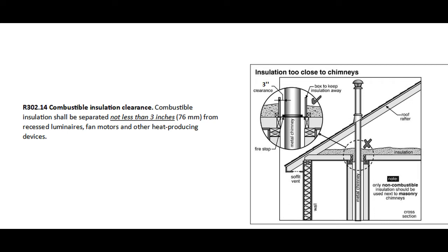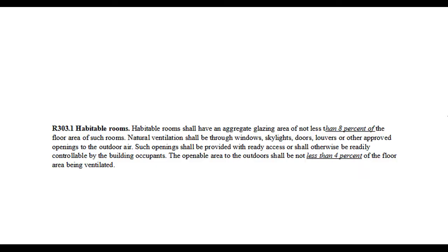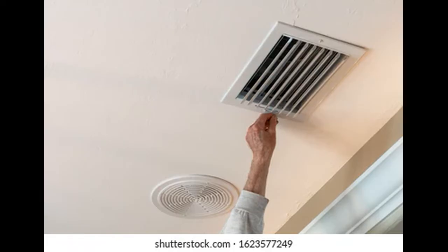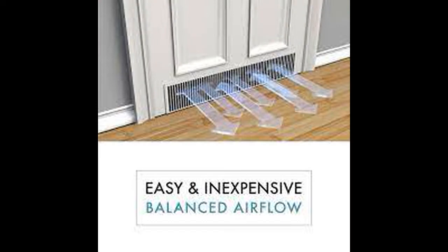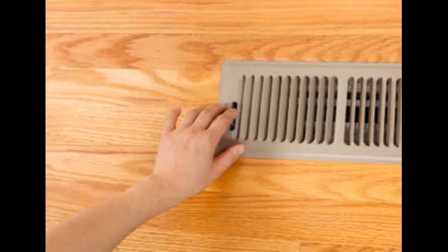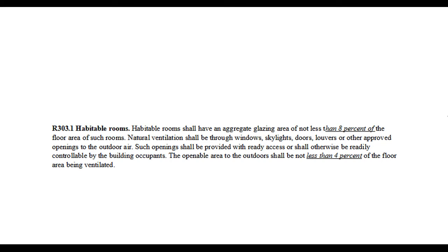R302.14 Combustible Insulation Clearance: 1. Combustible insulation shall be separated not less than 3 inches from recessed luminaires, fan motors, and other heat-producing devices. R303.1 Habitable Rooms: Habitable rooms shall have an aggregate glazing area of not less than 8% of the floor area of such rooms. Natural ventilation shall be through windows, skylights, doors, louvers, or other approved openings to the outdoor air. Such openings shall be provided with ready access or shall otherwise be readily controllable by the building occupants. The openable area to the outdoors shall not be less than 4% of the floor area being ventilated.